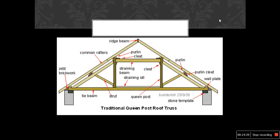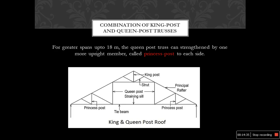The combination of king and queen post truss uses the king post at the topmost truss member with struts, while the queen post with struts and straining sill is connected by means of a tie beam. This combination is adopted for spans up to 18 meters.